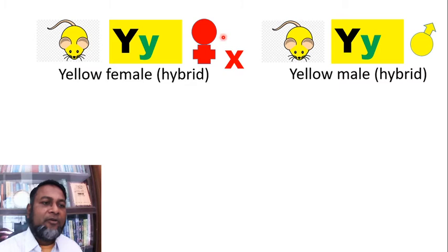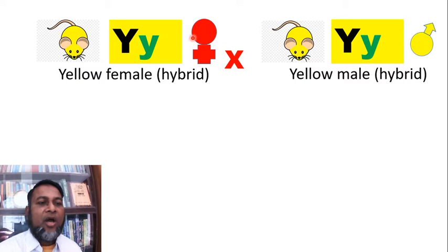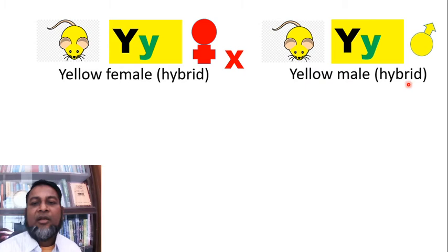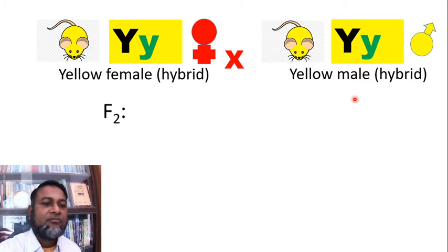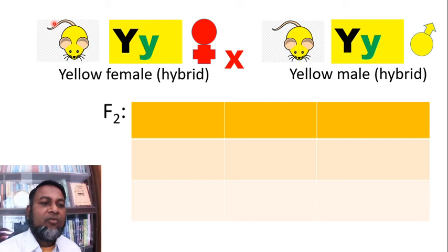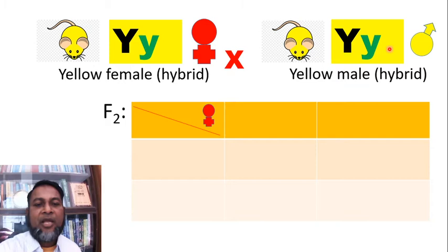Because the capital Y, capital Y genotype is not found due to lethality, we find only capital Y, small y heterozygous male or female mice, which are yellow in phenotype. We take a yellow female as hybrid and a yellow male as hybrid. In this cross, yellow female is crossed with yellow male.